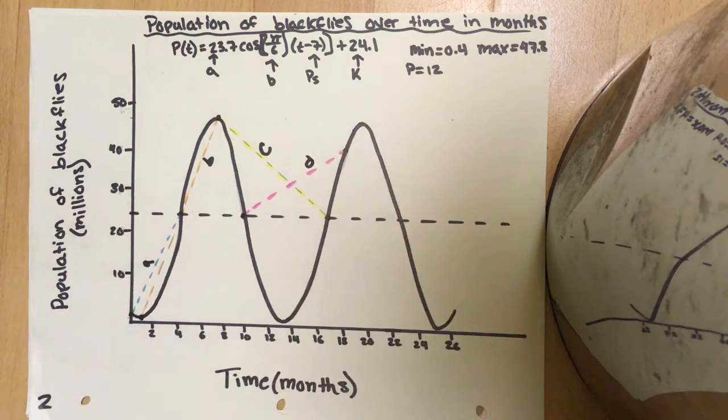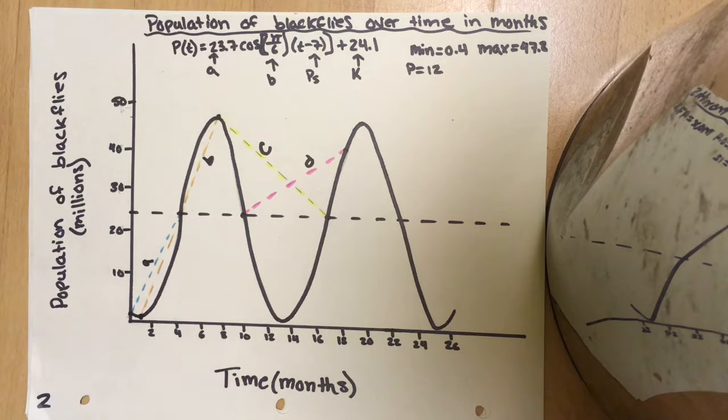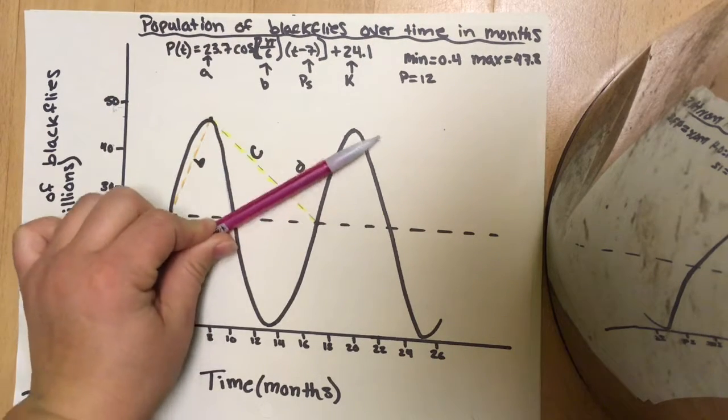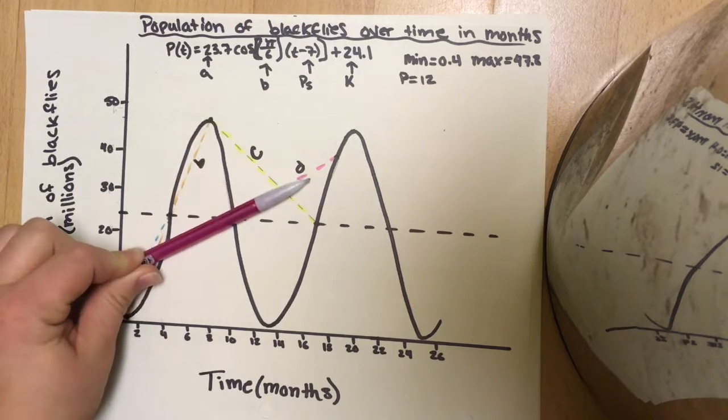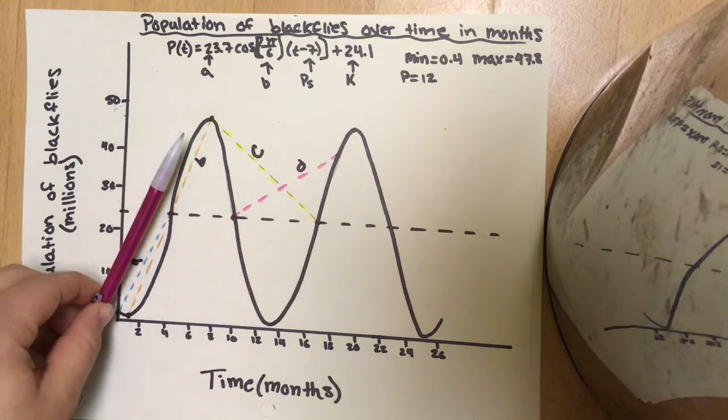What they're asking us is which one has the greatest slope. Right away we can see that C actually has a decreasing slope, it's going to be negative. So we know that C is not going to have the greatest rate of change. If we look at D, we can see that D is definitely not as steep as A or B. So we know that D is probably not going to be our greatest rate of change.